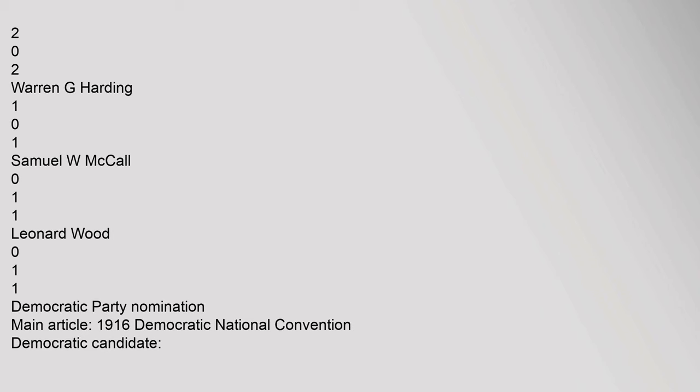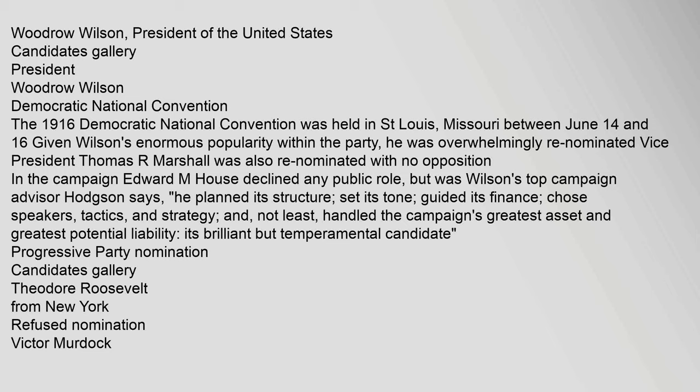The 1916 Democratic National Convention was held in St. Louis, Missouri between June 14 and 16. Given Wilson's enormous popularity within the party, he was overwhelmingly re-nominated. Vice President Thomas R. Marshall was also re-nominated with no opposition. In the campaign, Edward M. House declined any public role but was Wilson's top campaign advisor — he planned the campaign's structure, set its tone, guided its finance, chose speakers, tactics, and strategy, and handled the campaign's greatest asset and potential liability: its brilliant but temperamental candidate.